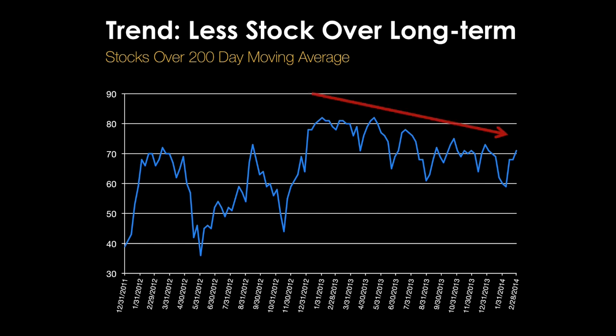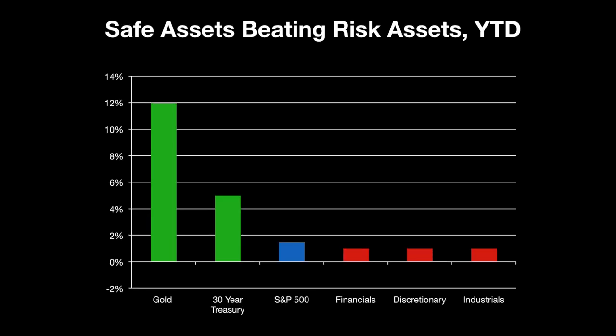The next one we're going to look at is a study of inter-market relationships. In this case we're using safe haven assets — assets that investors flow to for safety, including gold and the 30-year treasury — and comparing them to more risky positions such as financial stocks, discretionary stocks, and industrial stocks. As you can see on the left side of the chart, gold and 30-year treasuries have had a great year: gold is up 12 percent, treasuries are up about 5 percent, while the S&P 500 is only up about 1.5 percent. So safe haven assets are currently winning. Furthermore, financials, discretionary, and industrial stocks — which have led the market higher over the last two years and depend on the economic cycle — are all trailing the S&P 500 year-to-date.